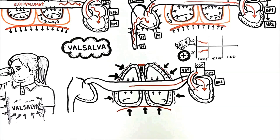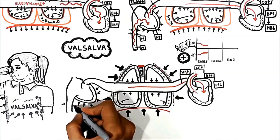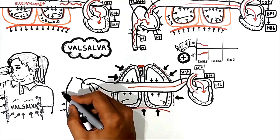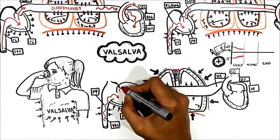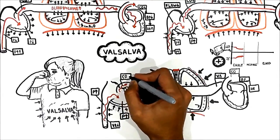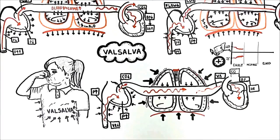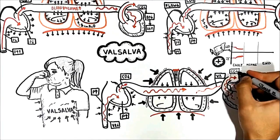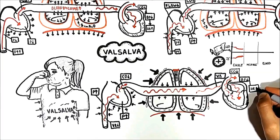If you continue the Valsalva, keeping the lung squeezed, the thorax continues to be a high-pressure system for a long time. In addition to the lung vessels, the positive pressure compresses the right heart as well as thoracic veins. Thus, the pressure in the right heart and thoracic veins increases, thereby decreasing the pressure gradient for venous return to the right heart. Systemic venous return decreases, leading to decreasing right ventricular output. This decreases the flow to the lung, which in turn decreases the flow to the left heart. As a consequence, cardiac output decreases, leading to decreasing blood pressure, which in turn increases heart rate reflexively.